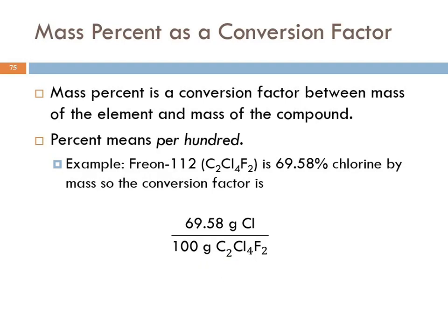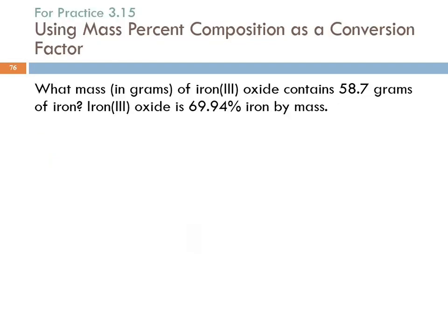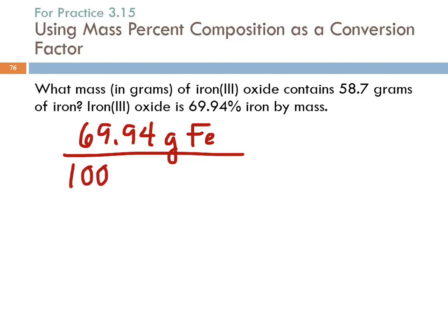If we had five kilograms of Freon 112, and we wanted to know the mass of chlorine that was in that, we could use the percent mass to calculate that. What mass in grams of iron three oxide contains 58.7 grams of iron? We're told that iron three oxide is 69.94% iron by mass. Let's take that percentage and write it as a conversion factor. 69.94% iron. So grams of iron per how many grams of the whole thing? One hundred. And that one hundred, because this is a percent, that one hundred is an exact number. This number is not exact. The hundred in hundred percent is exact.